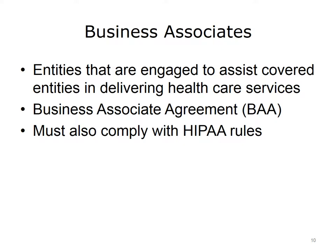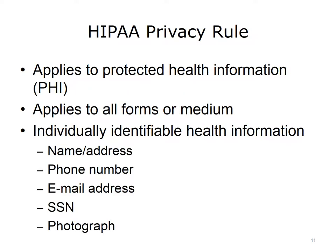The HIPAA Privacy Rule applies to what is termed protected health information, or PHI, that is held or transmitted by a covered entity or its business associates. The term PHI refers to individually identifiable health information that is transmitted electronically, maintained in electronic media, or transmitted or maintained in any other form or medium. Obvious examples of individually identifiable information are the patient's name, address, telephone number, email address, social security number, and photograph.